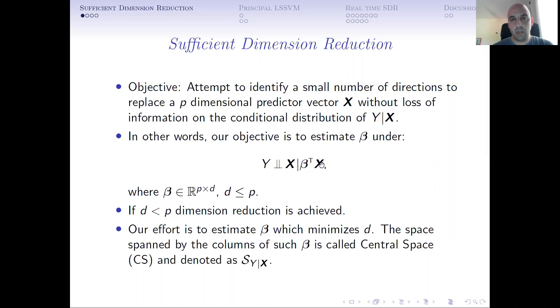We can say this as trying to estimate the matrix beta, a p by d matrix beta, where d less than or equal to p, such that this conditional-independence model is true: y independent of x given beta transpose x. We can put the identity matrix here instead of beta, but then we don't have dimensional reduction.